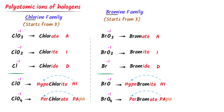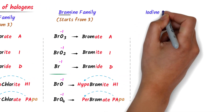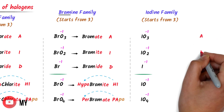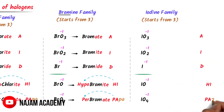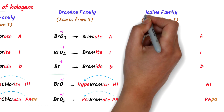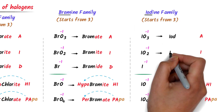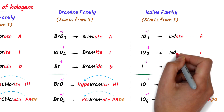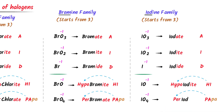Similarly, using this trick, we can easily name the polyatomic ions of iodine. Consider these polyatomic ions of iodine. I use the AID trick and Hi Papa trick to name them all. I take 'iod' and write it in front of all these ions. These are the names of the polyatomic ions of iodine.